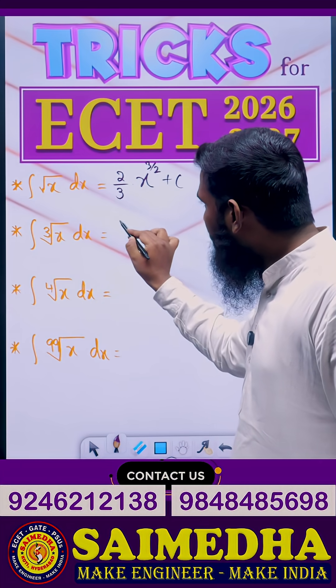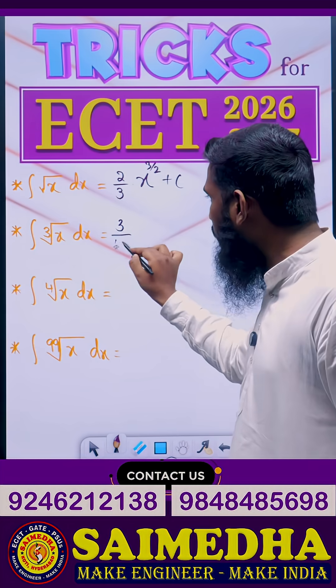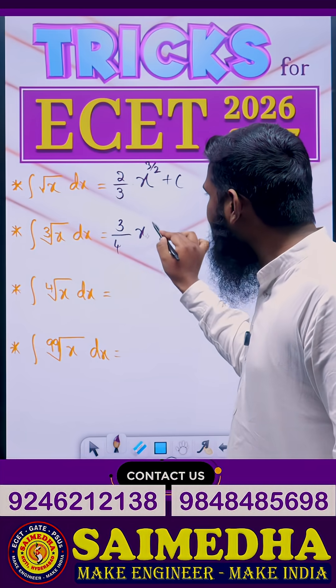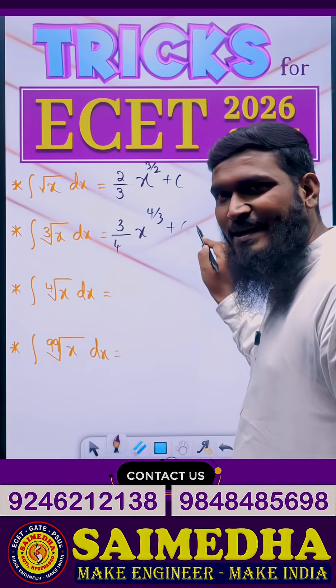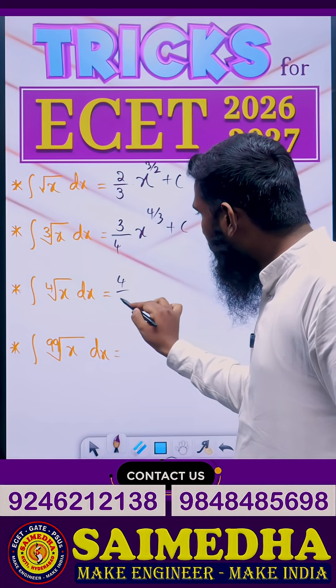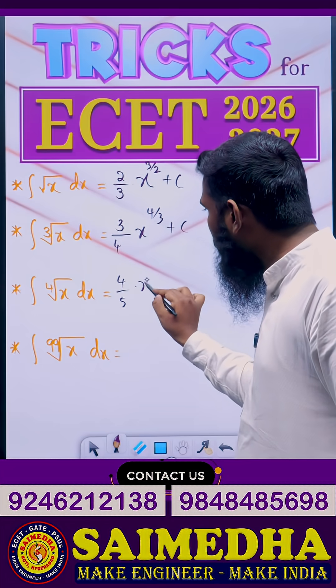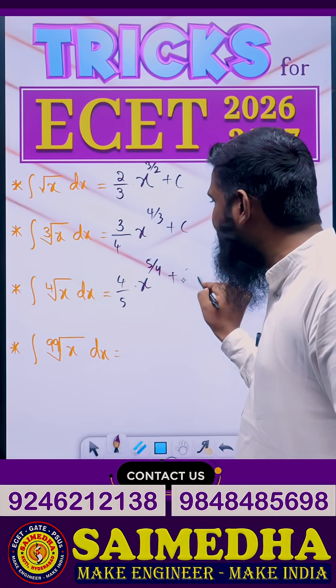Similarly, for cube root we have 3. We increase the number to 4: the answer is 3 by 4 into x power 4 by 3 plus C. Similarly, for the 4th root: 4 by 5 into x power 5 by 4 plus C.